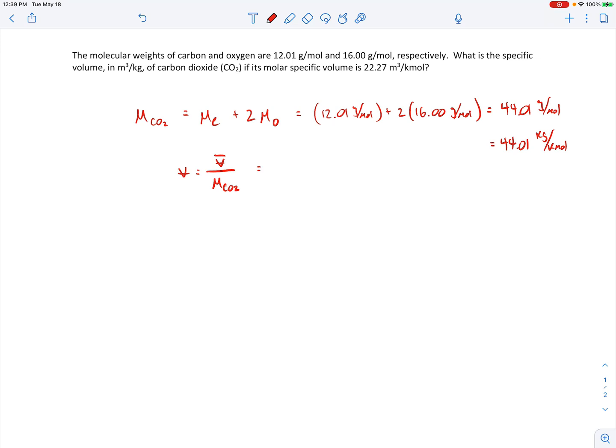So the molar specific volume was 22.27 cubic meters per kilomole. We'll divide it by the 44.01 kilograms per kilomole. You can see the kilomoles cancel one another out. And then when you work out the numbers, that comes out to be 0.506 cubic meters per kilogram.